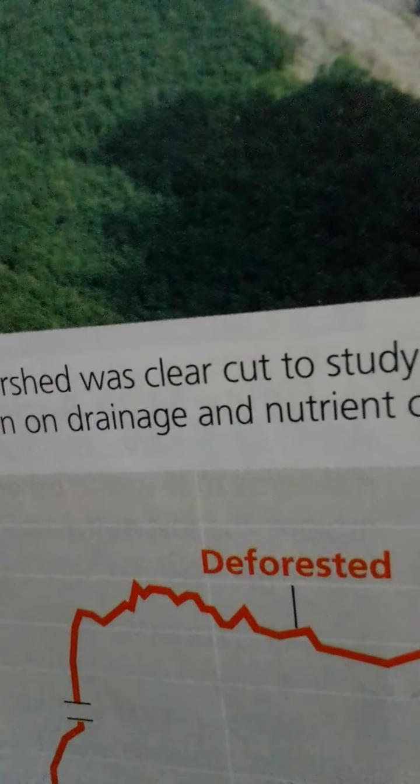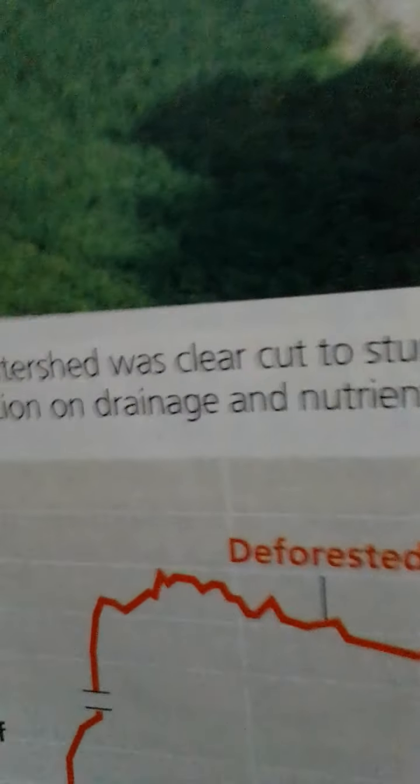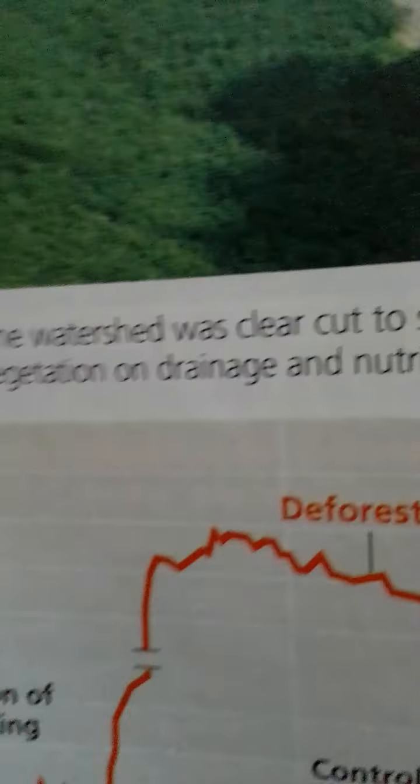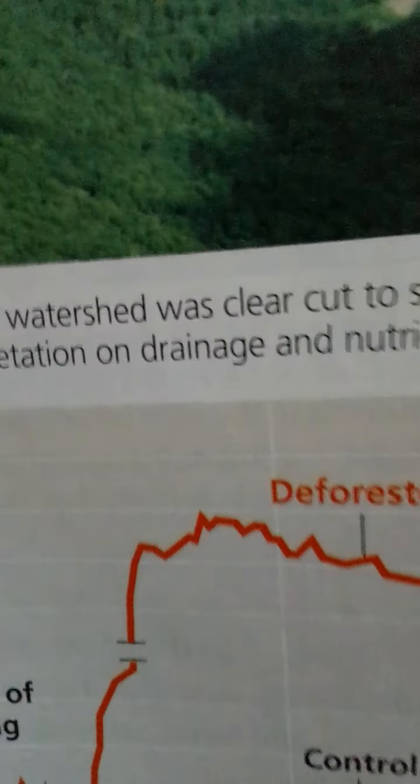The relatively low concentrations of some nutrients in the soil of tropical rainforests result from a fast cycling time, not from an overall scarcity of these elements in the ecosystem.